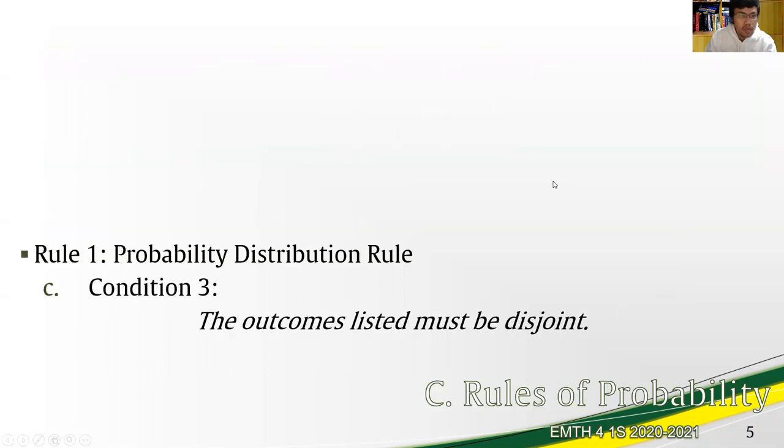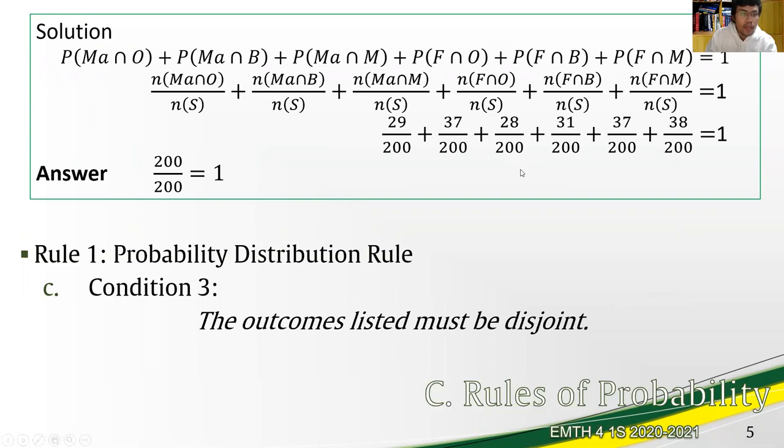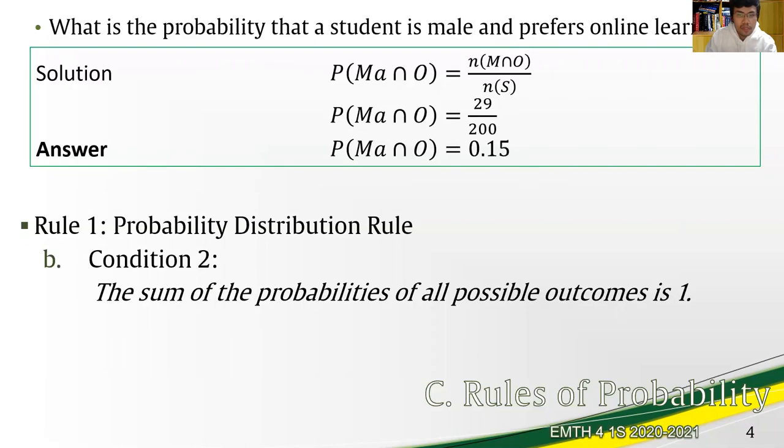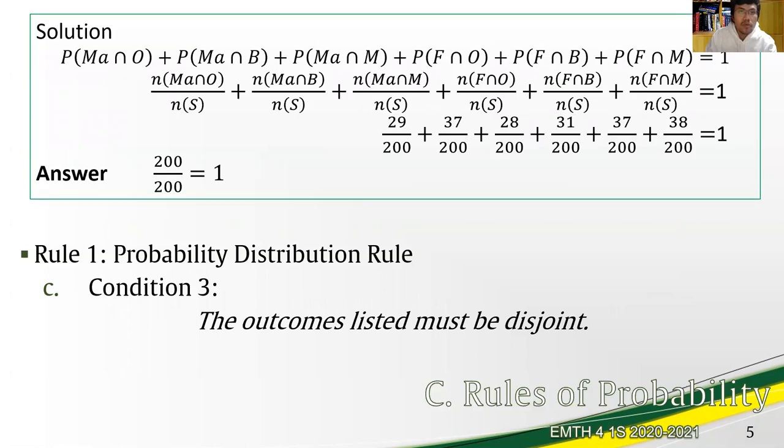Let us try to illustrate this with the given example again. We have here the probabilities of all the different combinations between the parameters of sex and learning arrangement. Thus, those that are male and preferring online arrangement, it has its own probability, male and preferring blended learning, male and preferring module, female and online, female and blended, and then female and module. The result would be all elements in the sample space, that would be 29, plus 37, plus 28, plus 31, plus 37, plus 38, and simply totaling 200 and dividing by 200 gives a probability of 1.